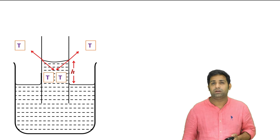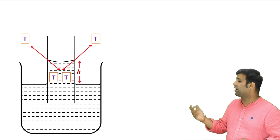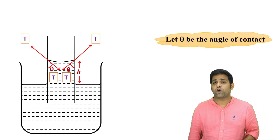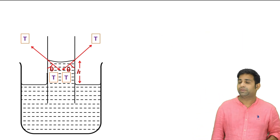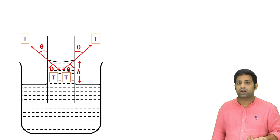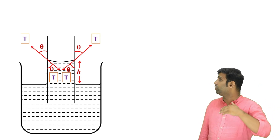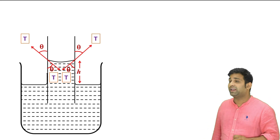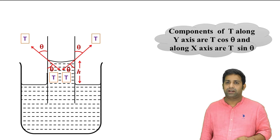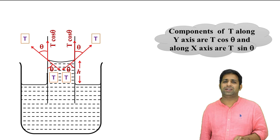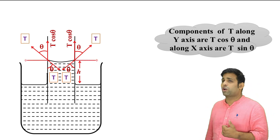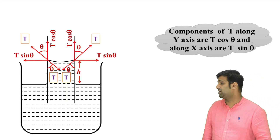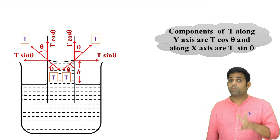The angle of contact here is theta. I have drawn it, and by vertically opposite angles, the upper angle will also be theta. Now the force T on the wall can be resolved into two components: along the y-axis (vertical) it is T cos theta, and along the x-axis (horizontal) it is T sin theta. The horizontal components T sin theta are equal and opposite, so they cancel each other out.